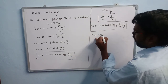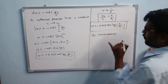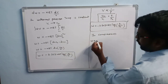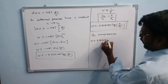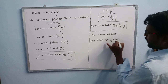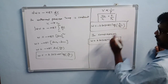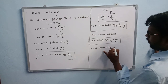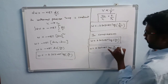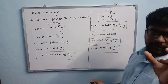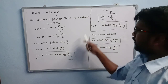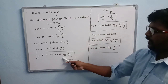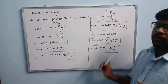For compression, the same formulas are used but with a positive sign instead of negative. So W = +2.303 nRT log(V2/V1), or in terms of pressure: W = +2.303 nRT log(P1/P2). The difference between expansion and compression is that expansion uses a negative sign and compression uses a positive sign.